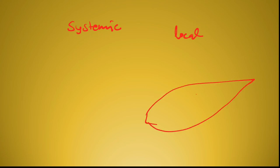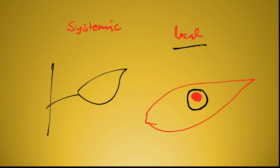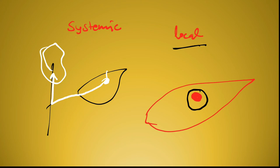यह जो symptoms होते हैं वो two types के होते हैं — systemic symptom और local symptom। Local symptom: infection leaf में हुआ और उसी spot के आस-पास lesions या pustules बनते हैं — यह हो गया local symptom। Systemic symptom: infection leaf में हुआ लेकिन pathogen पौधे के अंदर move करते हुए गया और stems में symptom develop हुआ। Infection leaf में हुआ था लेकिन symptom stem में दिखाई दे रहा है — इसी को systemic symptom कहते हैं।